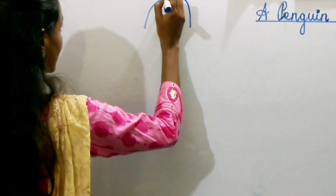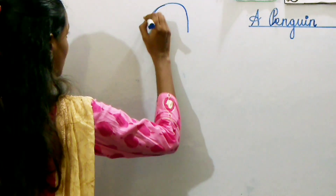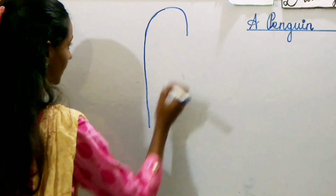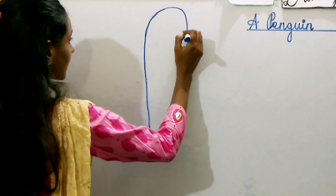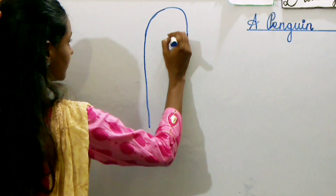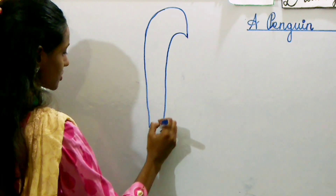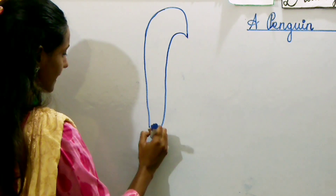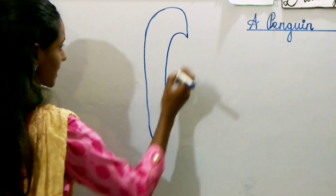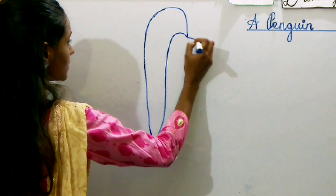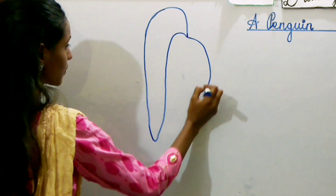Then we will draw a straight line, and a curve joining to the straight line. This becomes the body of the penguin.